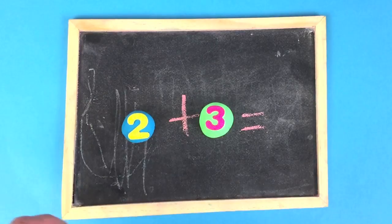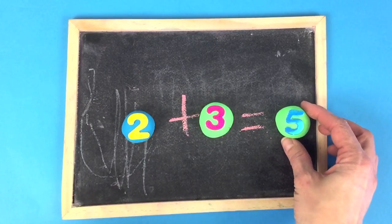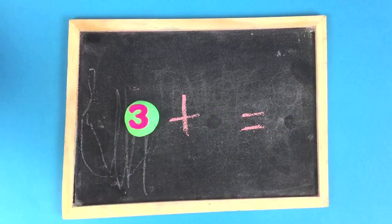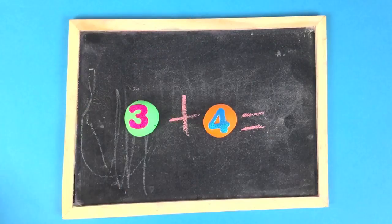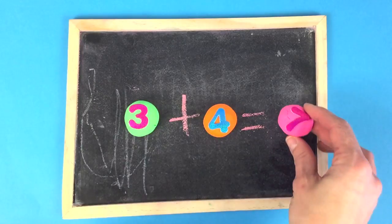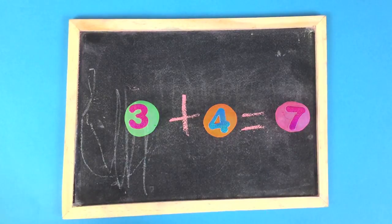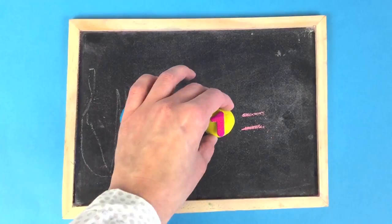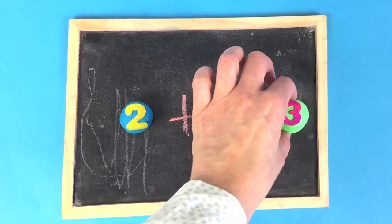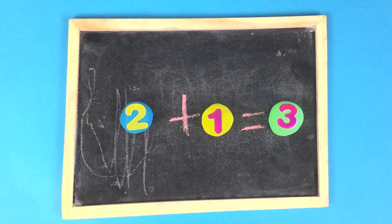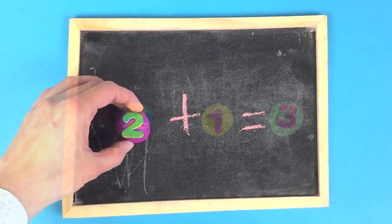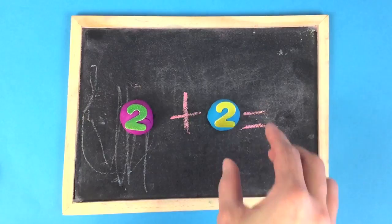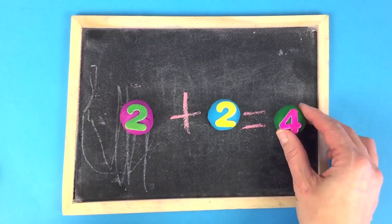2 plus 3 is 5. 3 plus 4 is 7. 2 plus 1 is 3. 2 plus 2 is 4.